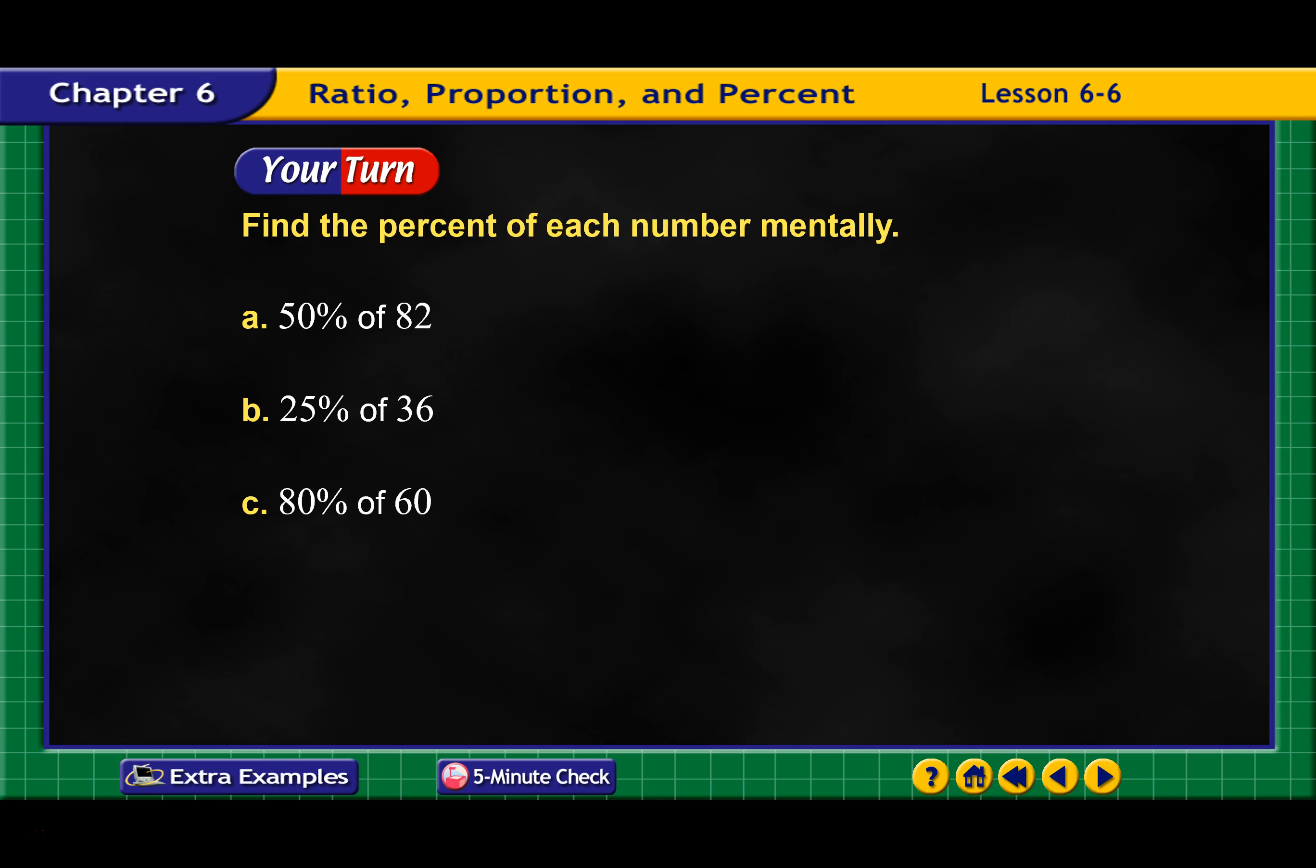Find the percent of each number mentally. 50% is one-half, so one-half of 82 is going to be divide that in half, which would be 41. 25% of 36 - one-fourth of 36 looks like 9 because four goes into 36 nine times. And then 80% of 60 would be 8/10 of 60. Ten percent of this would be 6, and 6 times 8 is 48.